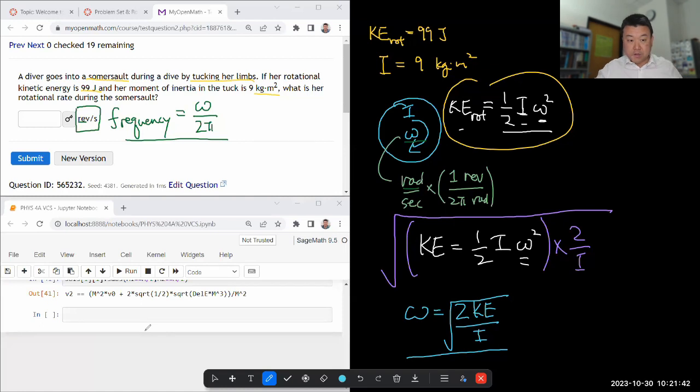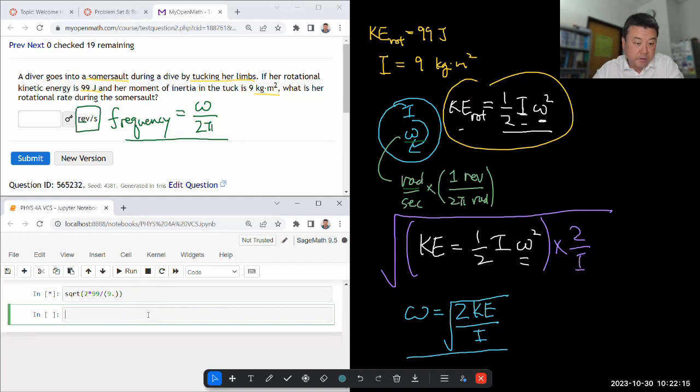And let me plug in the numbers. I'm just going to use this as my glorified calculator. Square root of two times kinetic energy, 99 joules. I'm just going to make sure that everything is in basic SI units. Divide by rotational inertia, nine kilogram times meter squared. And if you do the unit check, you should get unit of one over second, which again, because radian is not a real unit, one over second is equivalent to radians per second.